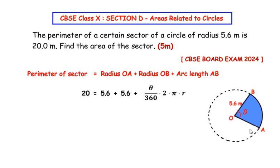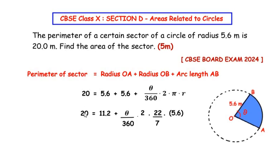Here the value of θ is not given, so we are trying to find the value of θ so that we can use it to find the area of the sector. In the next step we substitute the value of r, so we get 20 equals 5.6 plus 5.6 gives us 11.2 plus θ/360 × 2 times, in place of π we have written 22/7 times the radius is 5.6. Now let us take 11.2 on the left hand side.